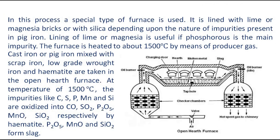In this process, a special type of furnace is used, as shown in the figure. It is lined with lime or magnesia bricks, or with silica, depending upon the nature of impurities present in pig iron. Lining of lime or magnesia is useful if phosphorus is the main impurity. The furnace is heated to about 1500°C by means of producer gas.